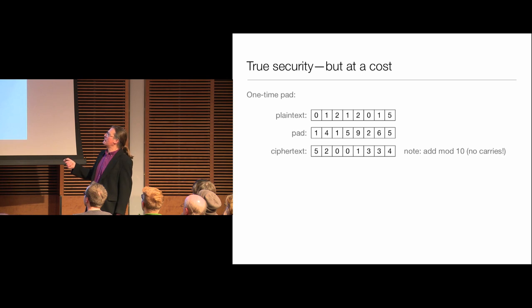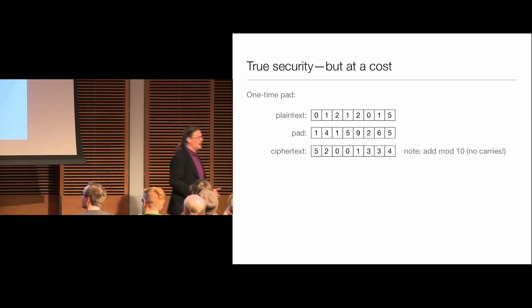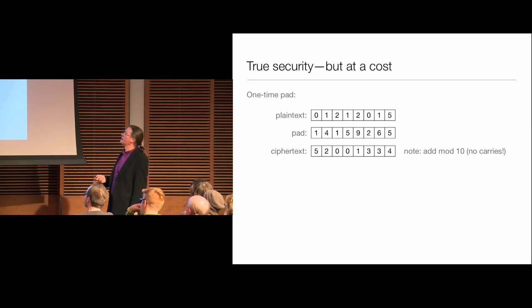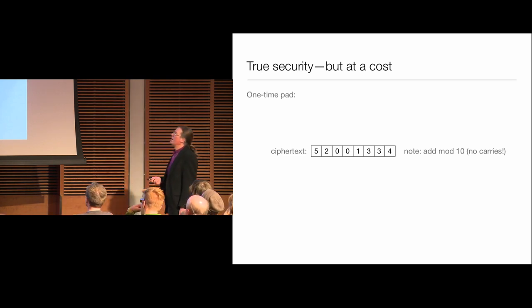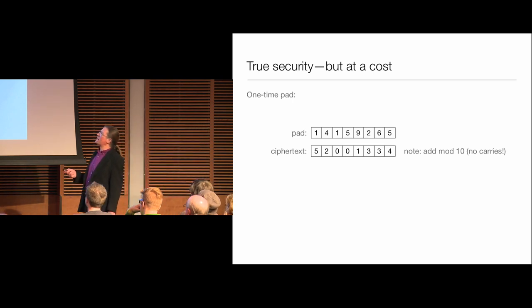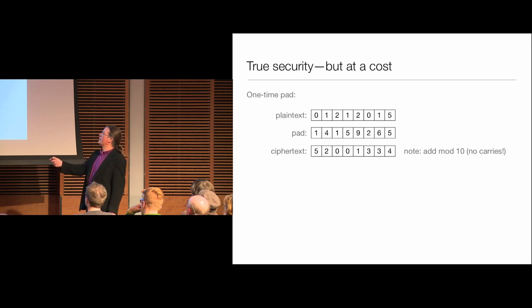Two plus nine is eleven, but I'm only going to keep the ones digit — so two plus nine is one. This is called addition mod ten — adding without carrying, keeping only the remainder when I divide by ten. You happily have a copy of this same pad, so to recover the original message, you just subtract off the digits I added.